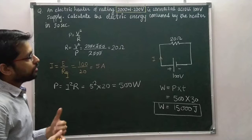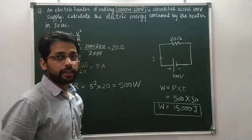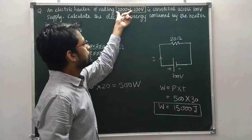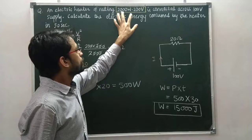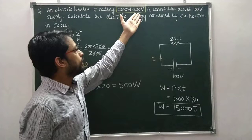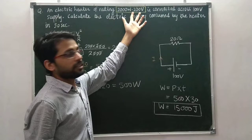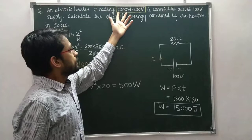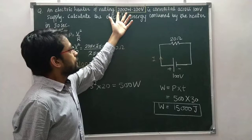What if the electric heater is connected across 200 V supply? Then the electric heater consumes 2000 Joules of energy in one second. This is the meaning of the power rating: when the appliance is connected across the voltage mentioned in the power rating, that wattage number gives you the energy consumption in Joules per second. Note it down.